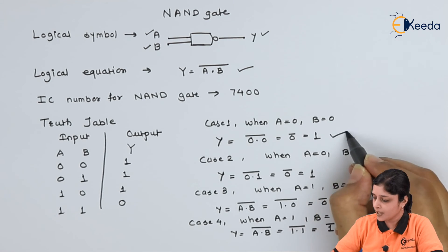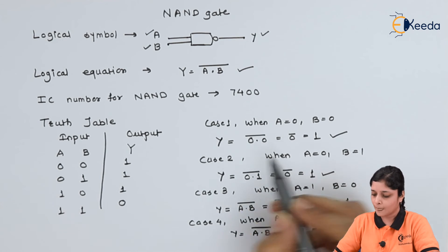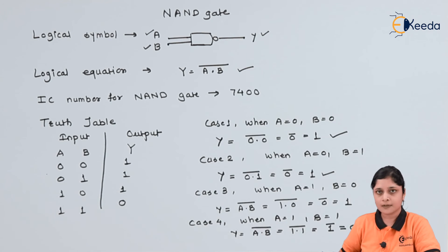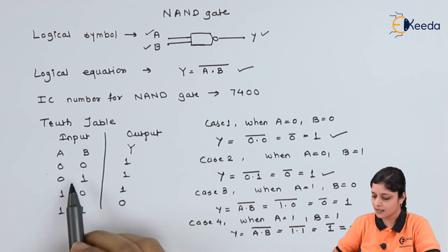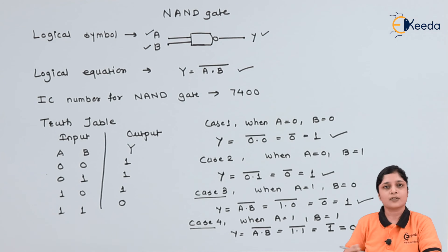So that's why we have written its all output. For first case 0,0 is one. For second case 0,1 is one. For third case 1,0 is again one. And for fourth case one dot one you will get Y as zero. So this is all about the basic explanation to the NAND gate.